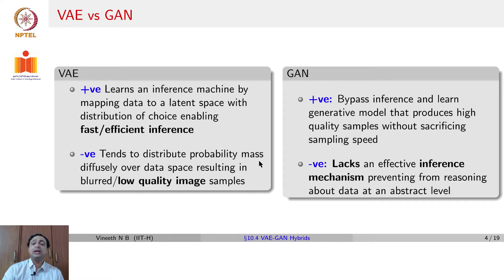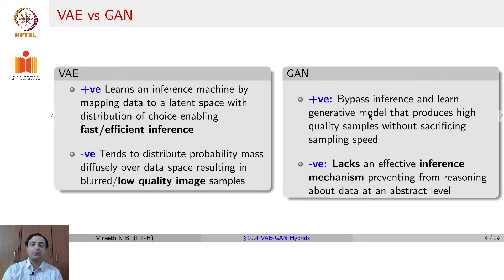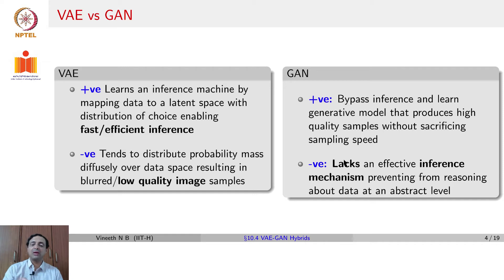On the other hand, GANs do not have an inference step — you do not try to learn a latent from data. You just give a Gaussian vector as input without worrying about whether that is the real latent manifold, and then you learn a generative model that produces high quality samples. The negative is that GANs lack that inference mechanism, which could prevent reasoning about data at an abstract level. For example, you cannot look at the latent variables and attach semantics — such as the first variable corresponding to identity, the second to expression, pose, and so forth — which is difficult to do with a GAN.